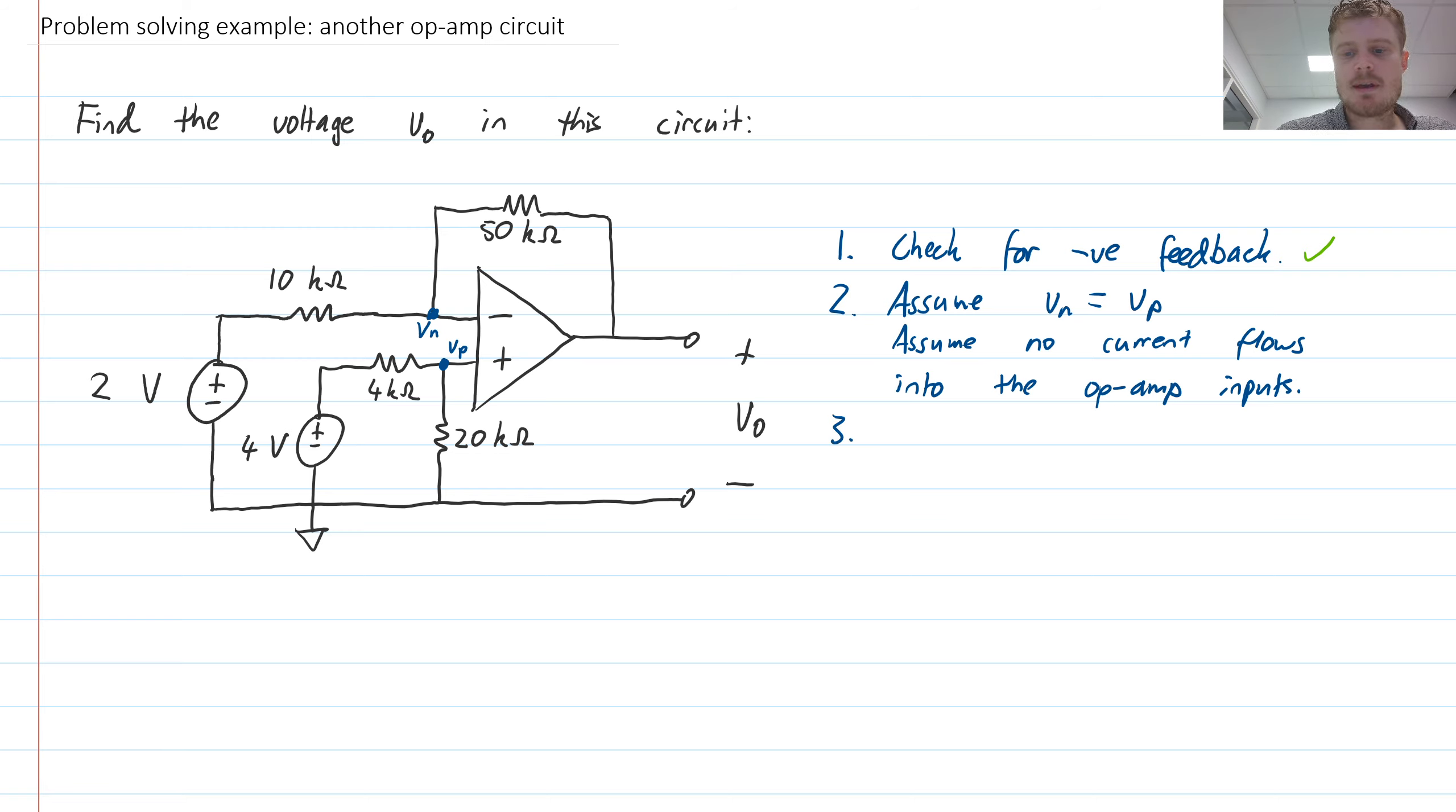And then step three is use KCL or KVL, basically whatever makes the most sense given the circuit layout that you have. I can see a strategy, which is that first I can analyze the voltage at the positive terminal, because that's a simple voltage divider network. And once I know that, then I will have a known voltage here at this node, and then it's a straightforward application of Kirchhoff's current law.